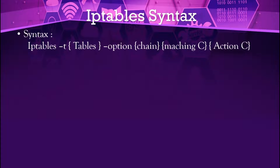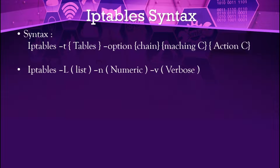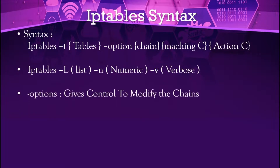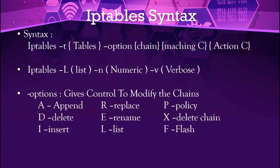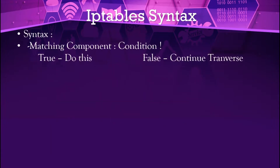The syntax for iptables is: iptables -t [table name] [option/chain] [matching component] [action]. The -t flag stands for table. iptables -L lists your current rules. iptables -L -n displays rules in numerical form. -v stands for verbose, meaning it will show detailed output. For options to control and modify chains: -A stands for append, -R stands for replace, and -P stands for policy.